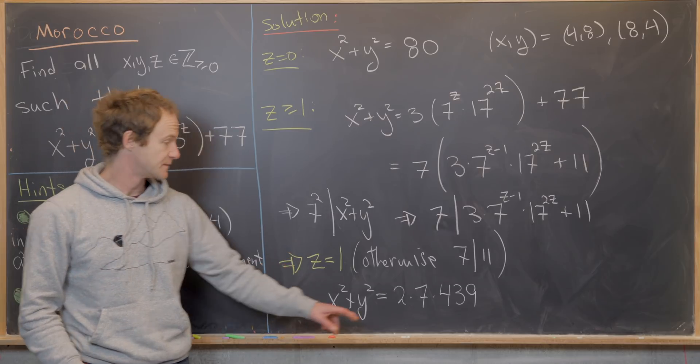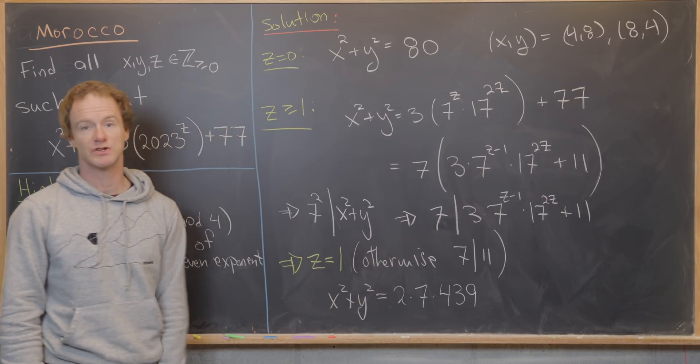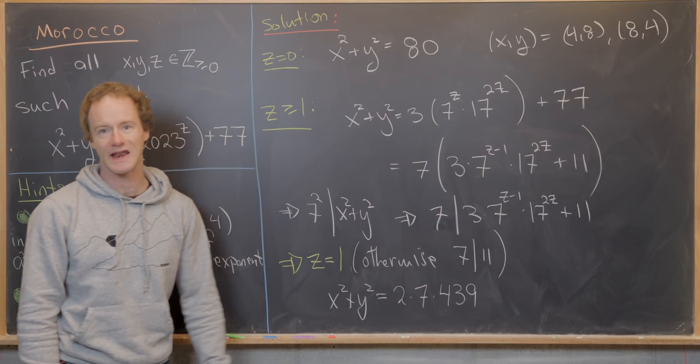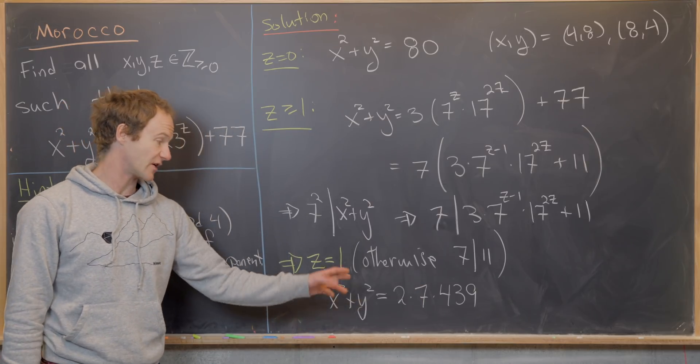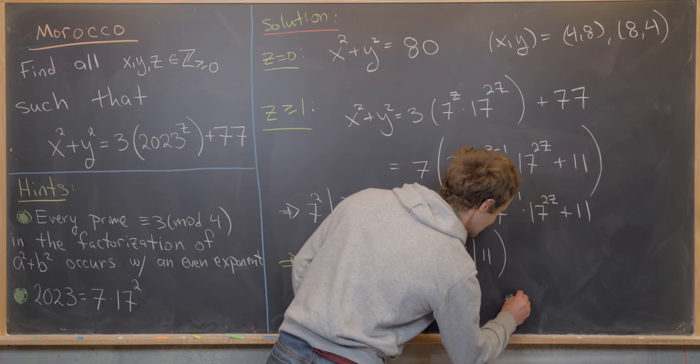But if we look at this, we see that 7 again, which is 3 mod 4 occurs with an odd exponent, which means there is no solution to this equation either.